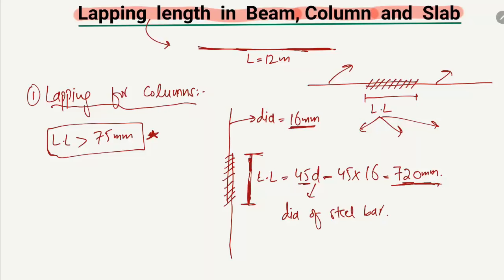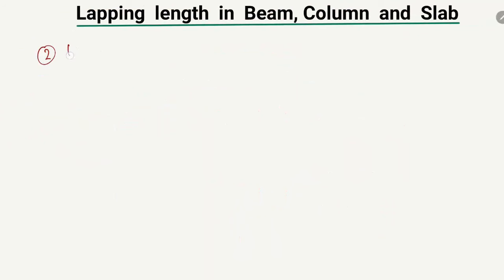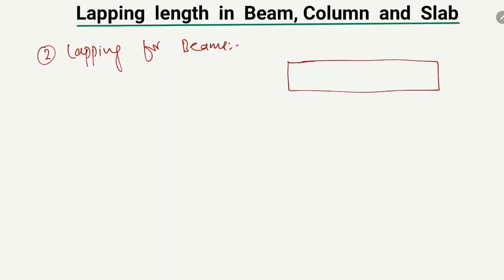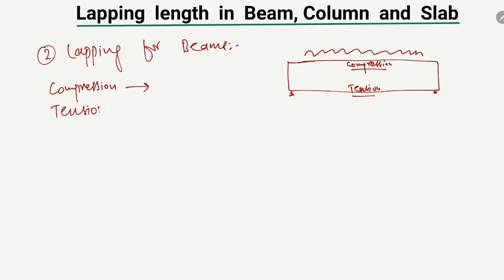Now, what is the lapping length for beams? For beams, there are two cases. Consider a rectangular beam — at the top there is a compression zone and at the bottom there is a tension zone. This is a simply supported beam loaded with a uniformly distributed load. So at the top we have compression and at the bottom we have tension. For the compression zone and for the tension zone, the lapping lengths are different.